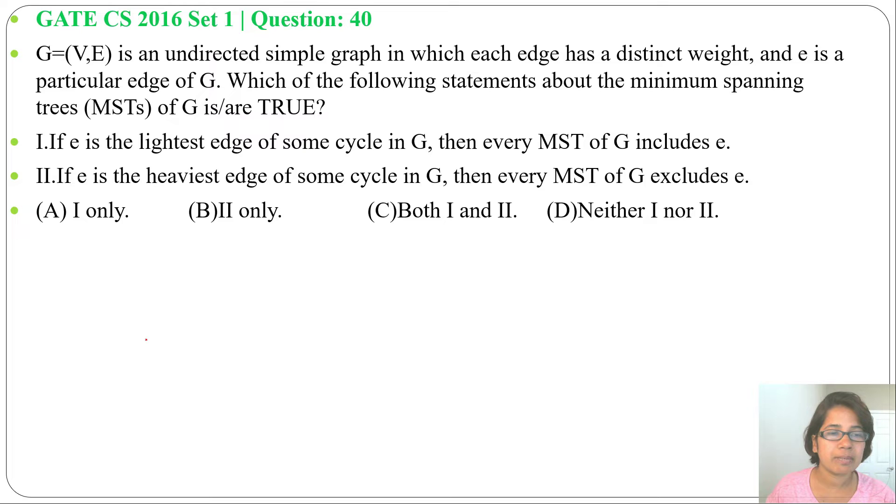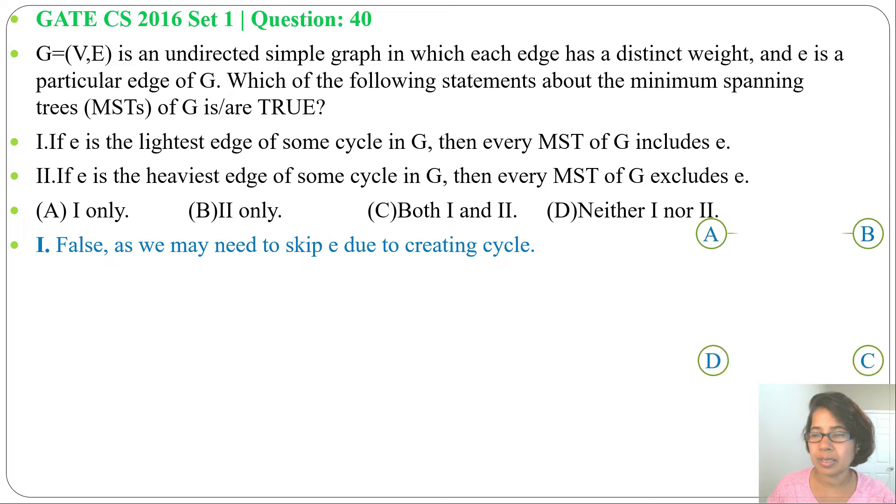Let's check one by one statement. First statement: if E is the lightest edge of some cycle in G, then every MST of G should include E. This is false, we may need to skip that edge due to creating cycle. Let's take an example, there are 4 vertices and 6 edges.